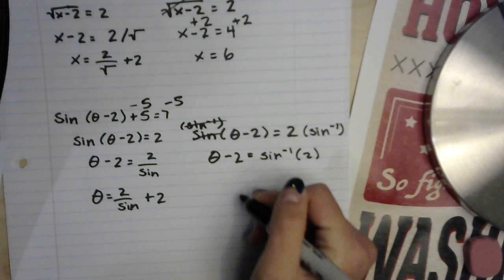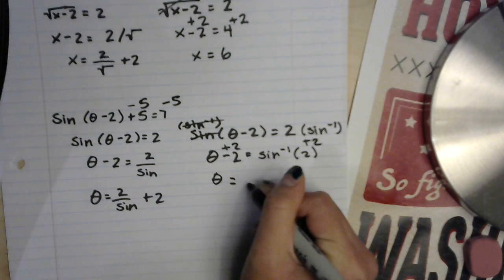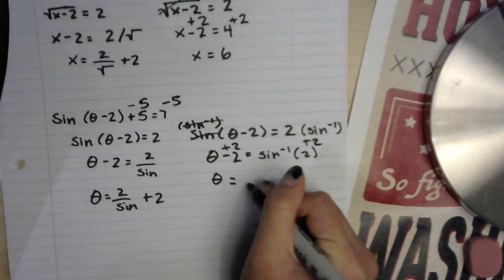So theta minus 2 equals arcsine of 2. And then we add 2 to both sides, so theta equals arcsine of 2 plus 2. Here you go.